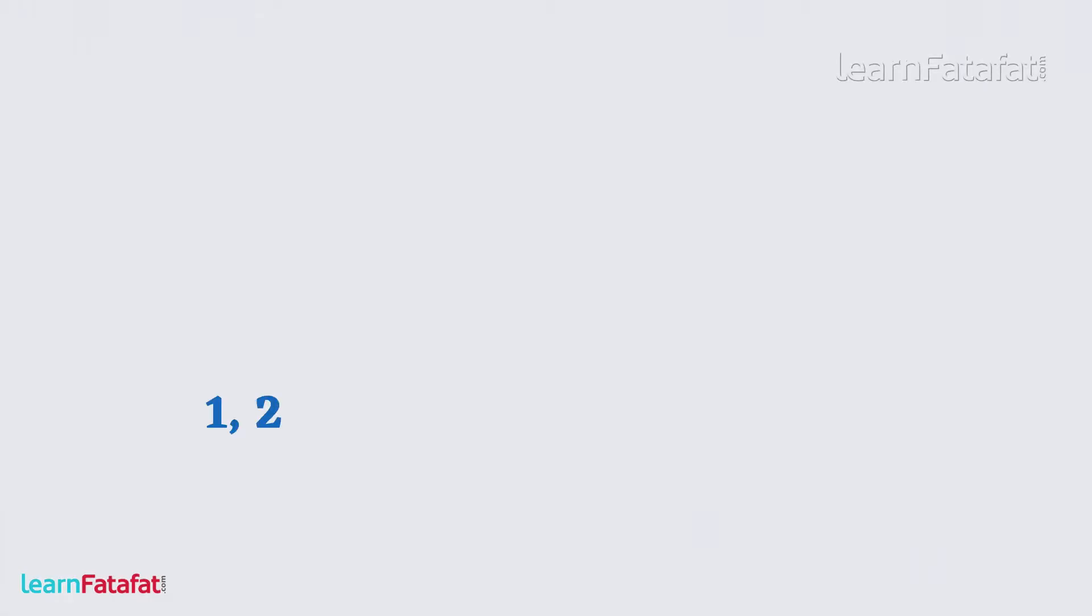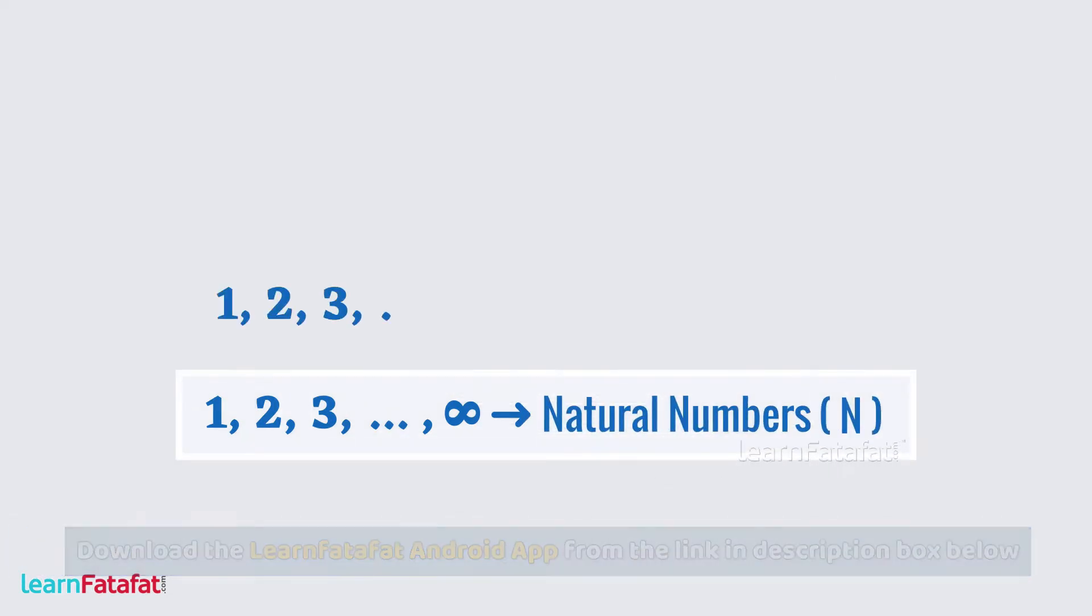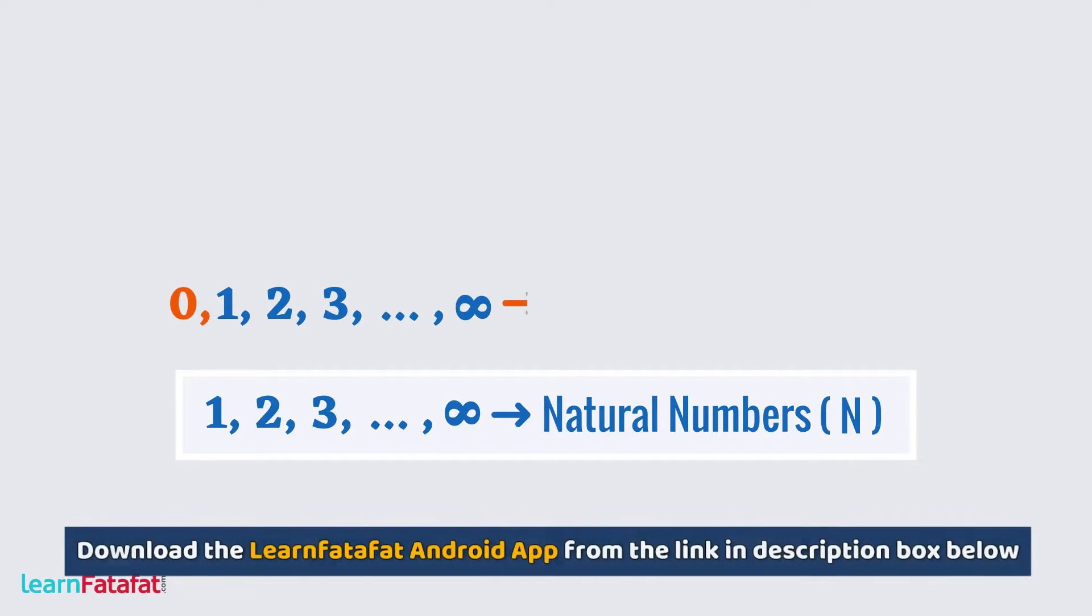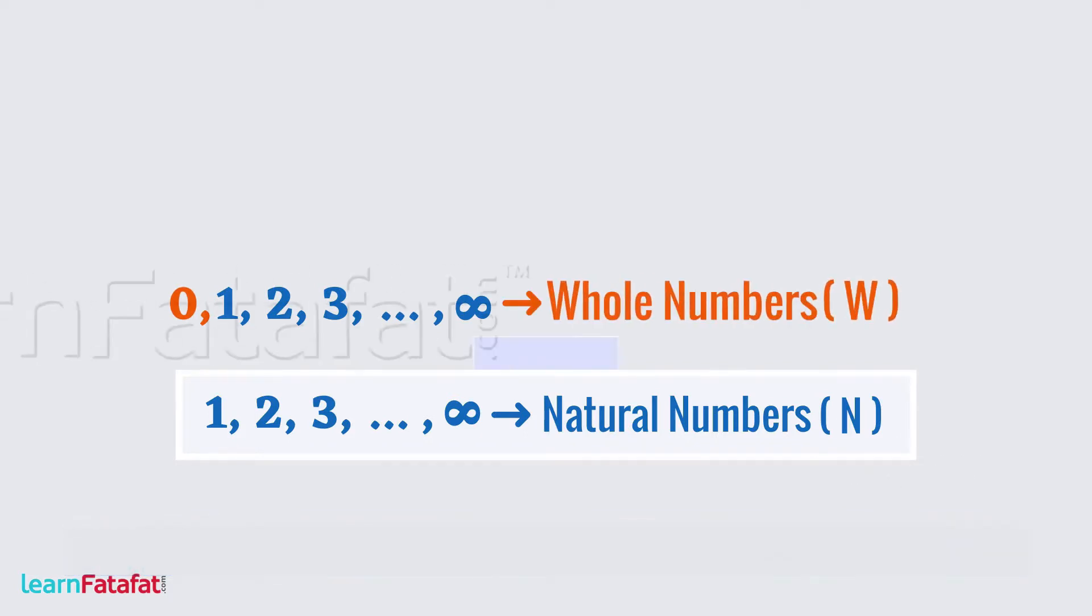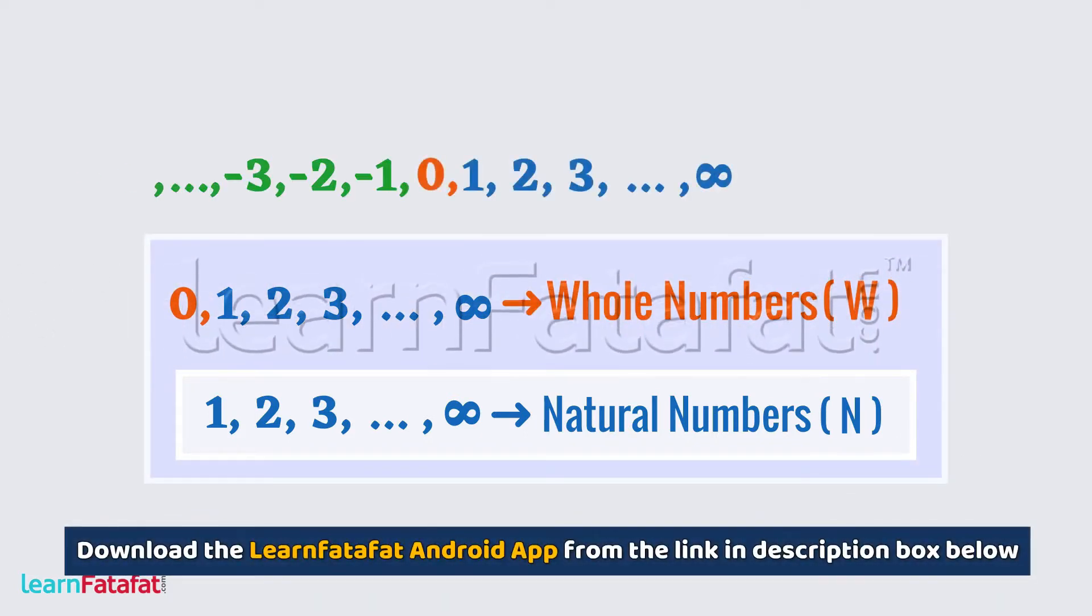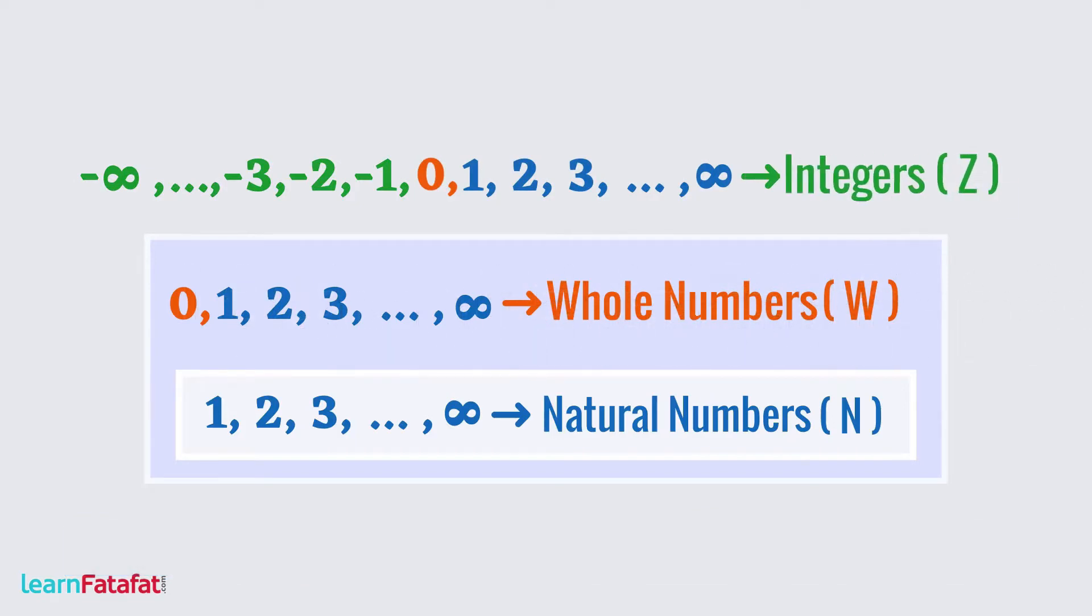Counting numbers 1, 2, 3, and so on are called natural numbers. All natural numbers along with 0 form a group of whole numbers. Whole numbers along with negative numbers form a group of integers.